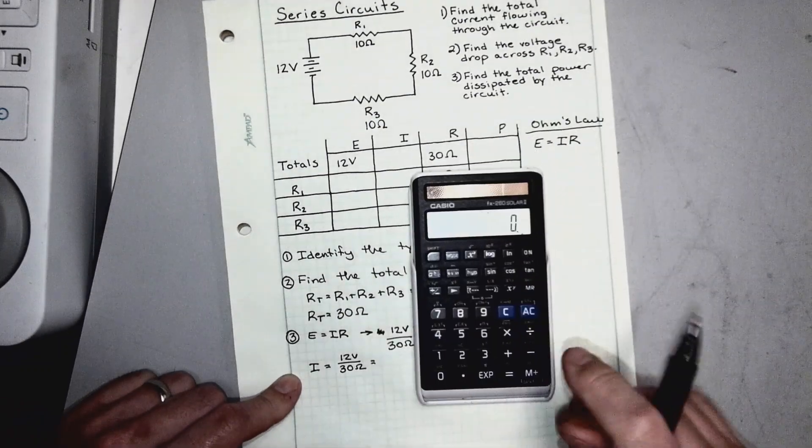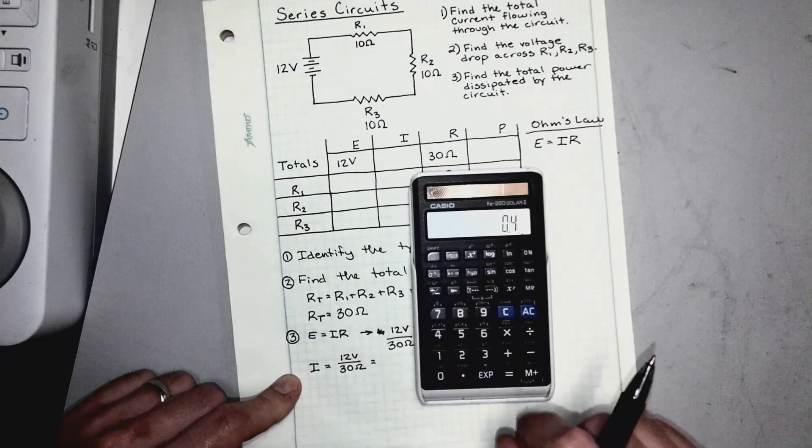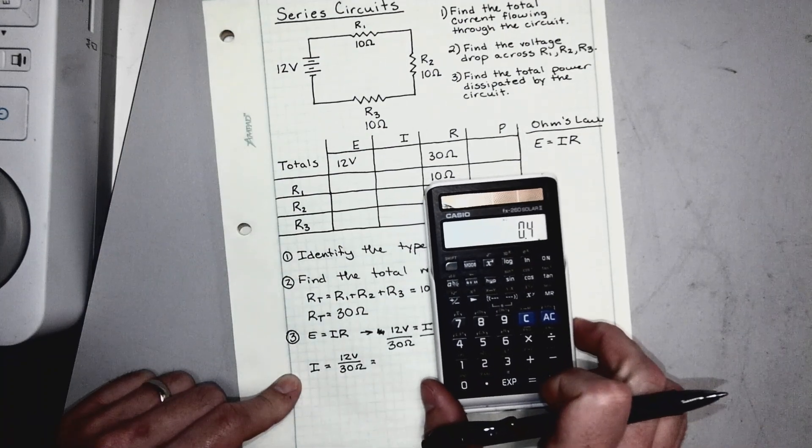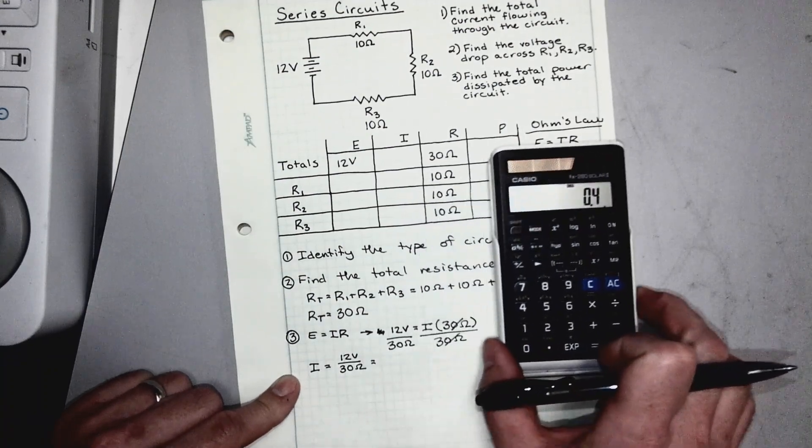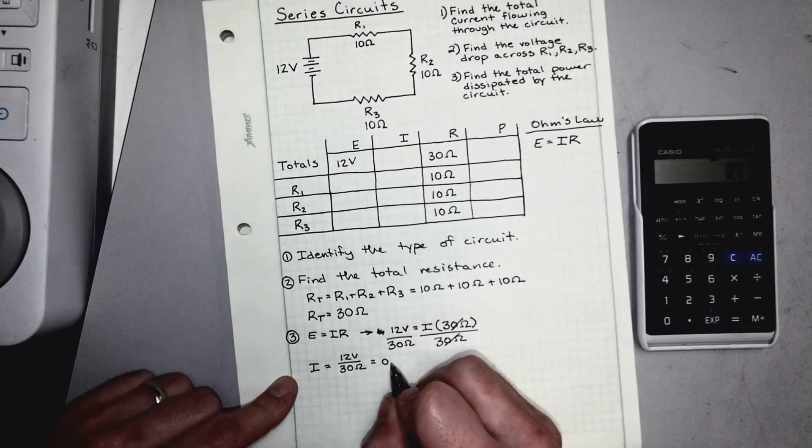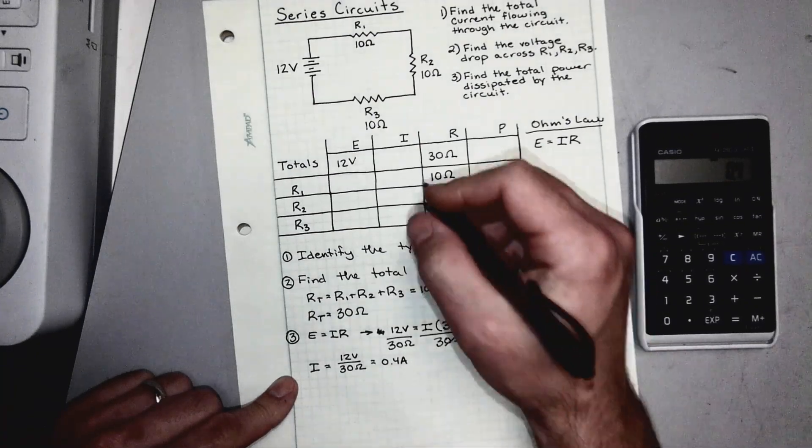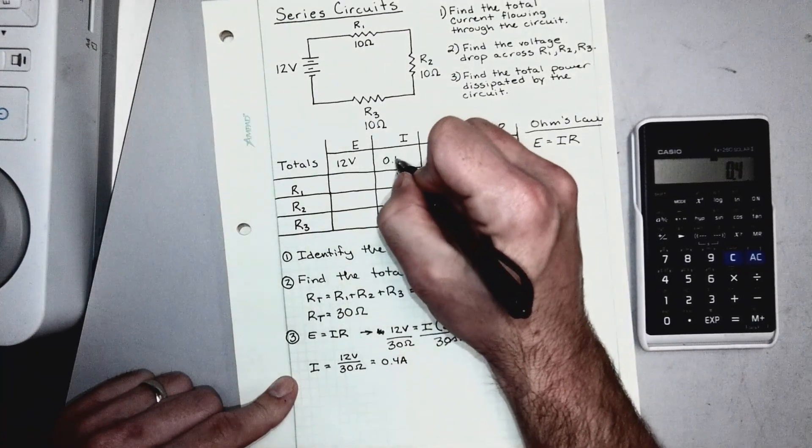All right, if we punch that into the calculator, it's 12 divided by 30. That's going to give us 0.4 amps. So current's always going to be given in amps, so 0.4 amps is our answer. We can just write that right there.